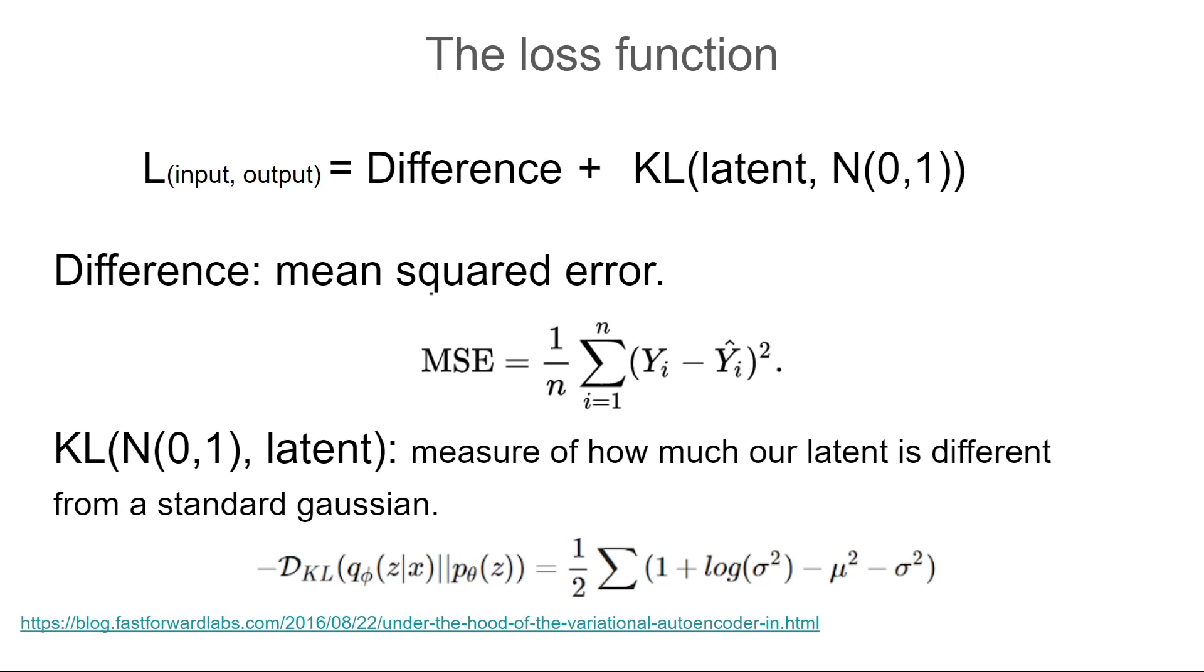Combining the inputs-outputs difference loss, which from now on we will call the reconstruction loss, and the KL divergence will result in a conflict between our network's desire to create a different vector for each input and its desire to create a vector of zeros and ones. The derivation of the KL divergence is from a blog post by Fast Forward Labs on variational autoencoder that I will link in the description.